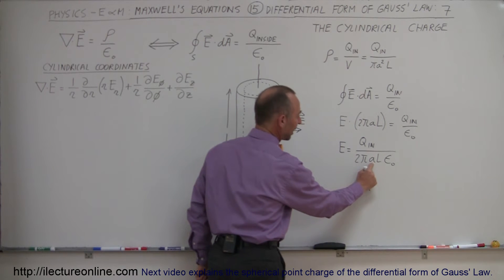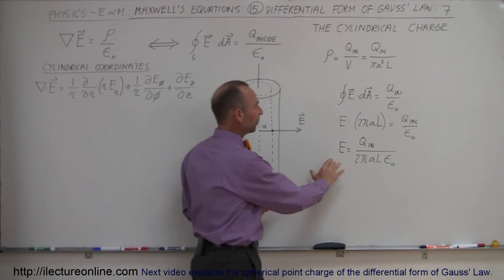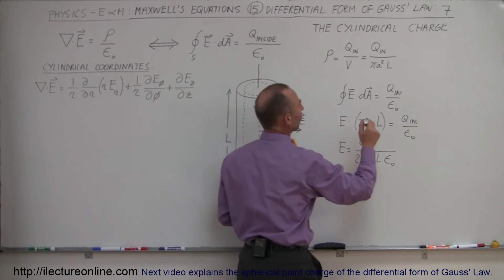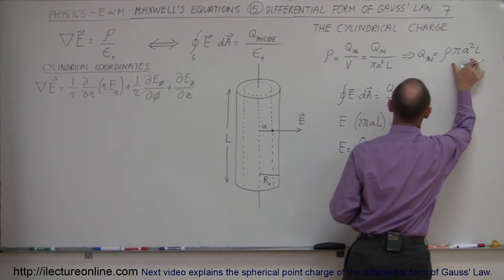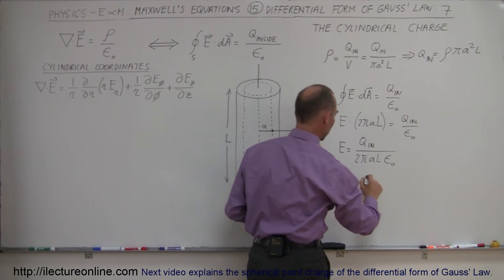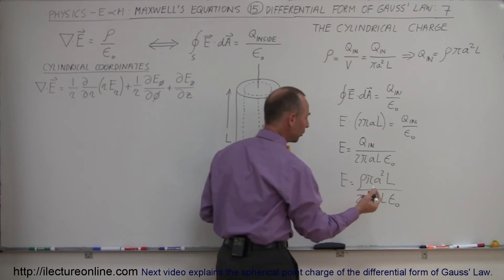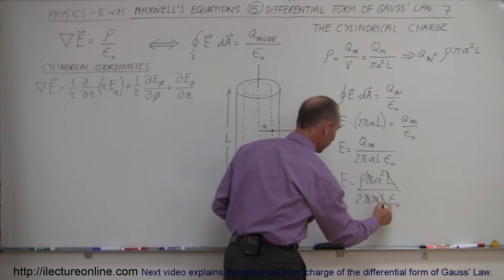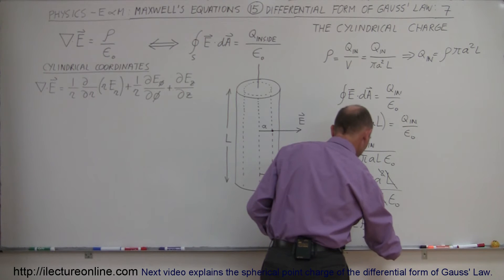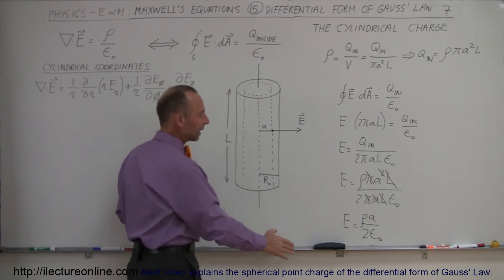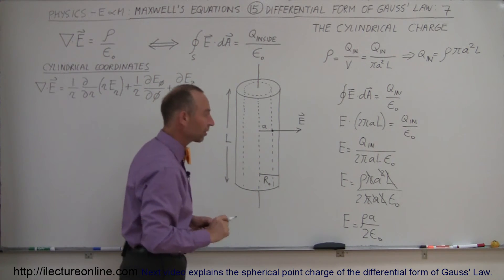The field depends on variable A. As A gets bigger, the electric field would get smaller — an interesting relationship. A better form of this is to replace Q inside in terms of the charge density. Q inside equals the charge density times pi A squared L. Substituting that in, E equals rho times pi A squared L divided by 2 pi A L epsilon sub naught. The L's cancel, the pi's cancel, one of the A's cancels, and in simple form the electric field strength equals rho times A divided by 2 epsilon sub naught. Now we can see the electric field strength depends linearly on A — the distance from the center of the cylinder to whatever point we consider.